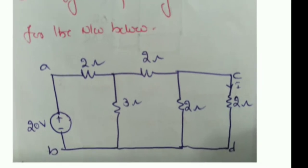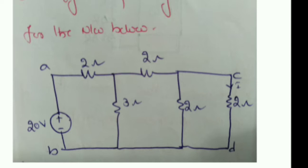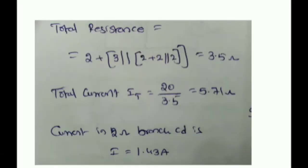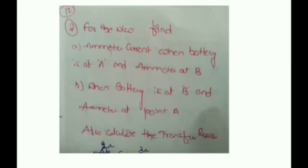To summarize: in case 1, calculate the total current and use the current division principle to find the current through the 2Ω resistor, then find the ratio of response to excitation. In case 2, replace the voltage source and repeat — calculate total current, apply current division, get the branch current, and find the ratio. If both ratios are equal, the network follows the Reciprocity Theorem.